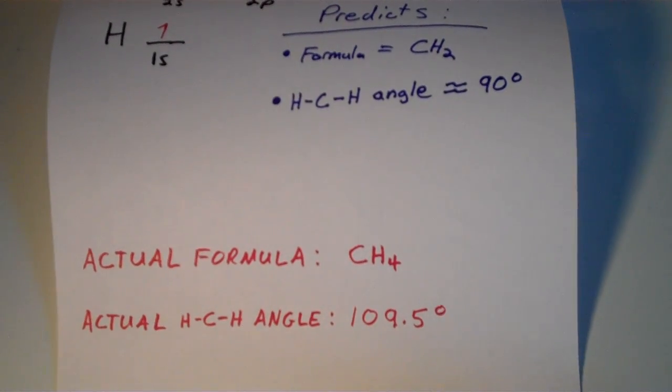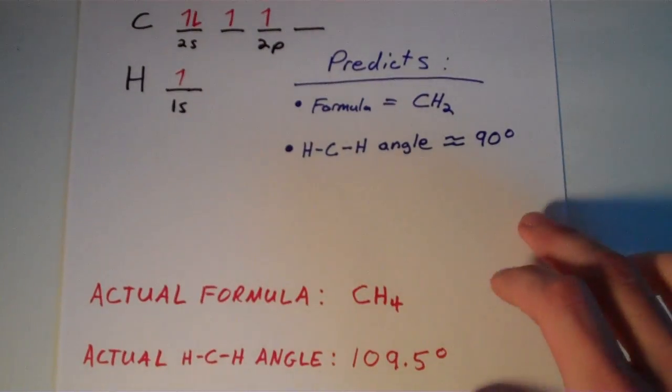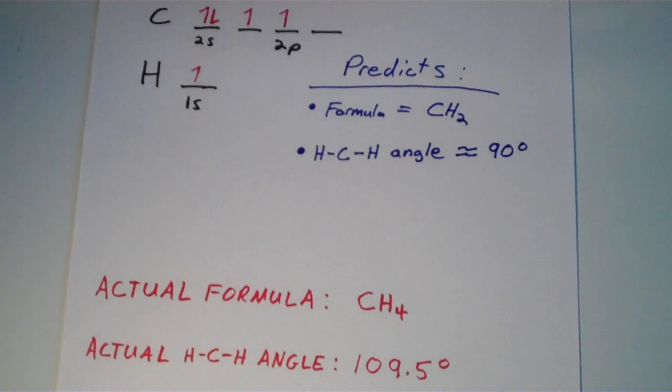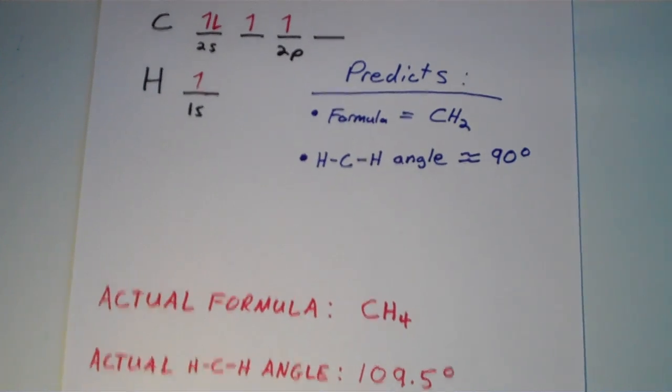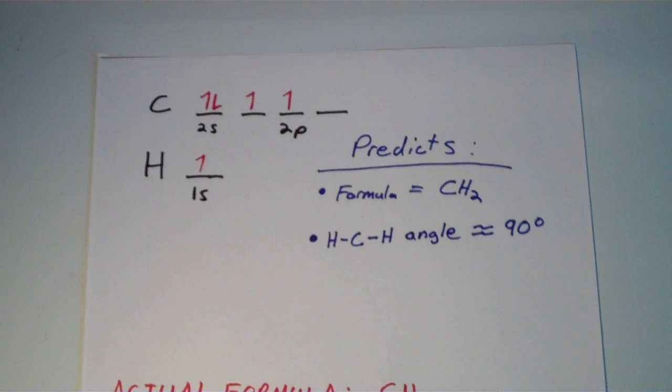And furthermore, the bond angle is 109.5 degrees, not 90 degrees. That's a huge discrepancy. So the standard atomic orbital overlap treatment worked for hydrogen sulfide, but it doesn't seem to work with a compound that is composed of carbon and hydrogen. So what is the explanation, what's going on?